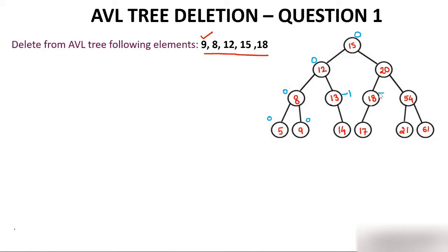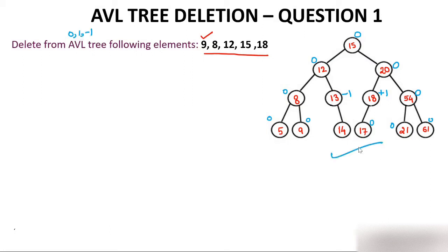Checking balance factors: node 12 has balance factor 0, some nodes have minus 1 because left has no element but right has 1, and some nodes have plus 1. Overall, every node of this tree has a balance factor of either 0, 1, or minus 1. So currently, without deletion, this tree is an AVL tree.